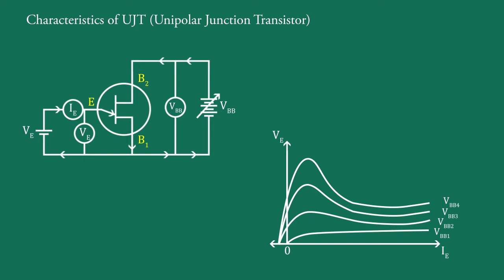This current is due to the minority carriers in the reverse bias diode formed by emitter E and base B2. Above a certain value of VE, emitter E and base B1 becomes forward bias, hence forward current IE begins to flow.